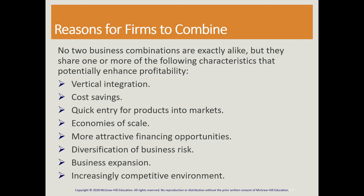Here are some of the characteristics of combinations. Basically, to achieve vertical integration, cost savings, and economies of scale, we have a quick entry of products into the market so we don't have to go through the middleman — because we are the middleman. This makes our business faster and more competitive than other companies. And of course, business expansion — it could be diversification, entering other industries and other businesses — increasing our competitive stance in the market.